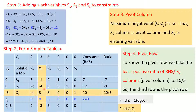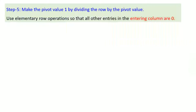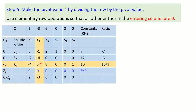The entering variable is x2 and the leaving variable is s3, so we replace s3 with x2. The coefficient of the entering variable x2 is minus 3. Step 5: the pivot value is the intersection of the pivot row and pivot column, which is 3. We divide the third row by 3 to make the pivot value equal to 1.